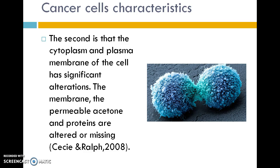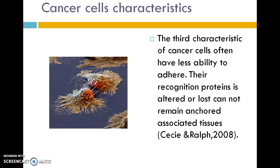The second characteristic is that the cytoplasm and plasma membranes of the cells have significant alterations. The membranes' permeable proteins are altered or missing. The third characteristic of cancer cells is that they often have less ability to adhere. The recognition proteins, if altered or lost, cannot remain associated with surrounding tissues.